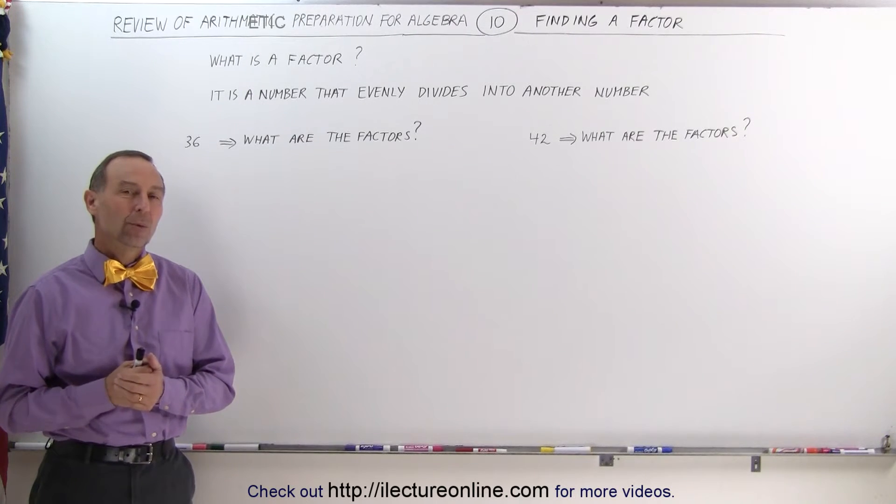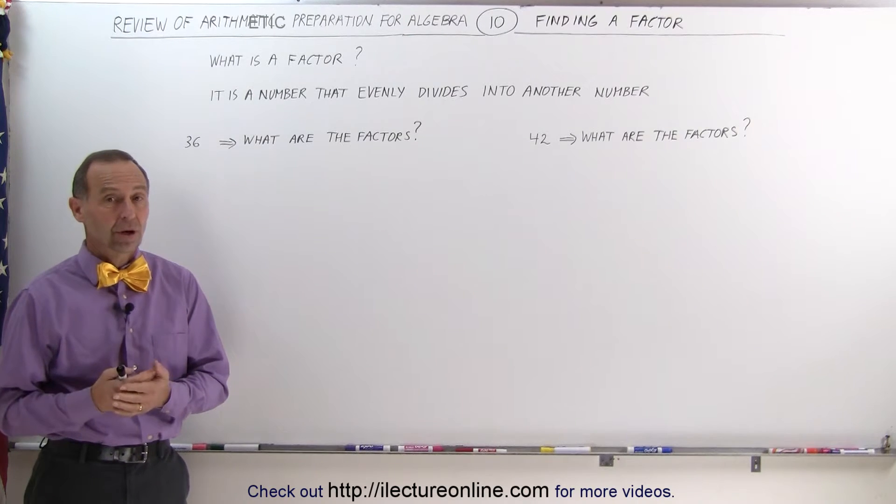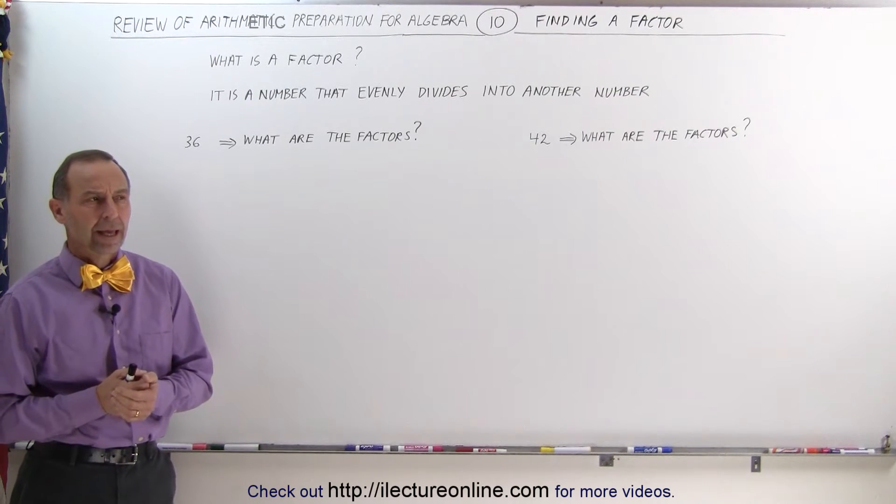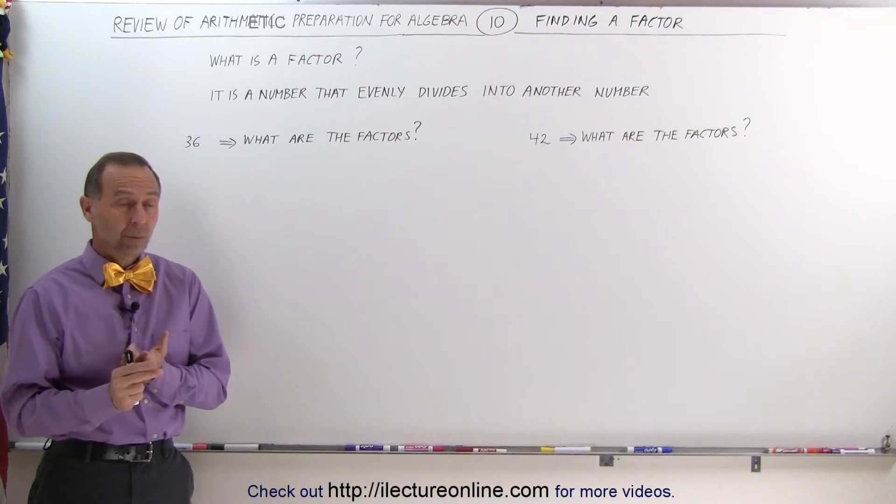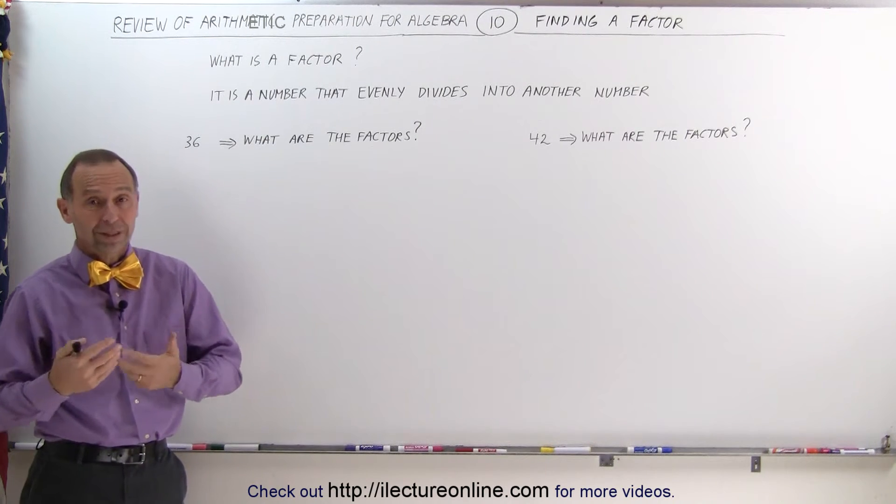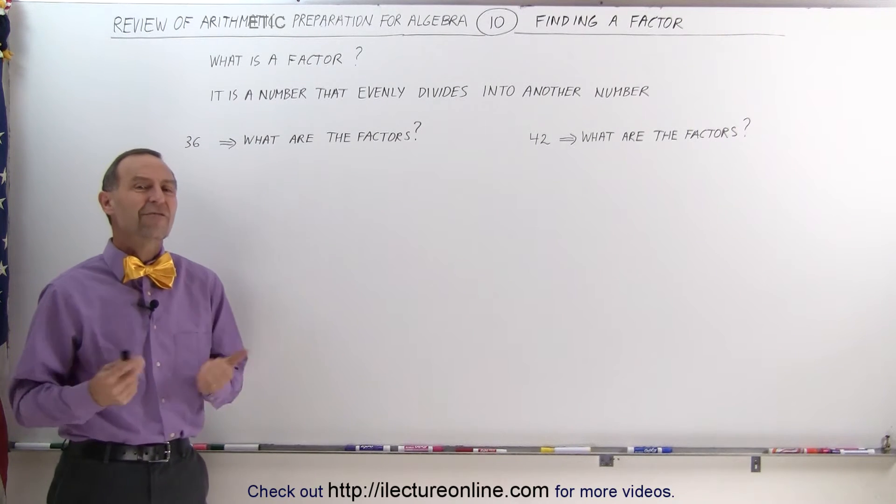Welcome to ElectrionLine. We're going to find the greatest common factor of a couple of numbers. In order to do that, we have to understand what a factor is and what a common factor is. And then we can figure out what the greatest common factor is. So let's start with the question: what is a factor?